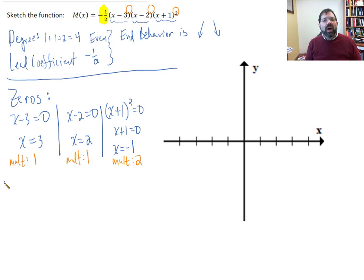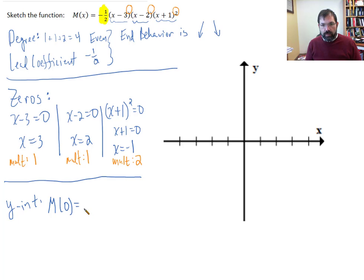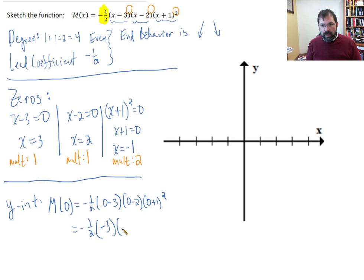Let's find the y-intercept. To find the y-intercept, we'll evaluate m of 0. That would be negative one-half times 0 minus 3, times 0 minus 2, times 0 plus 1 squared. So that's negative one-half times negative 3 times negative 2, and 1 squared is 1. That gives us negative 3.